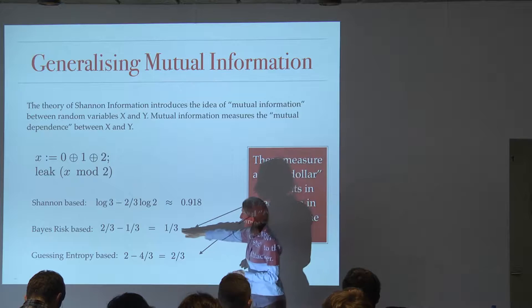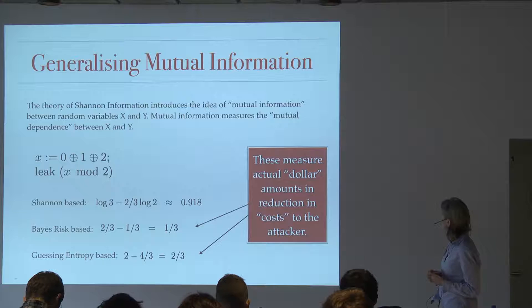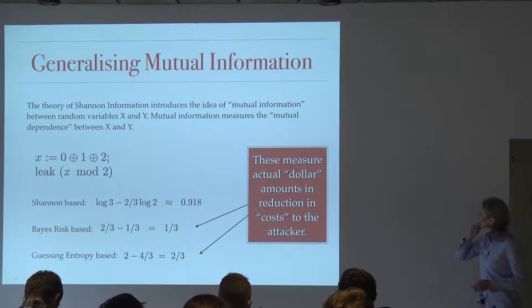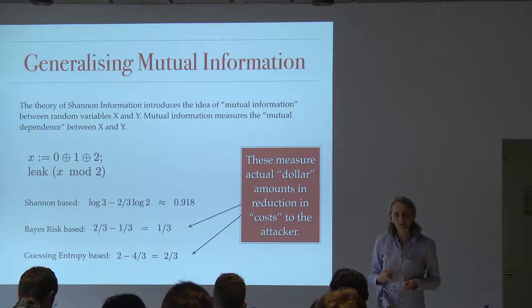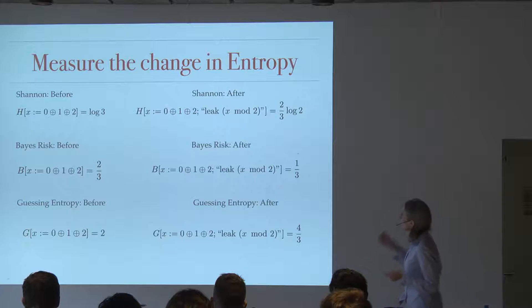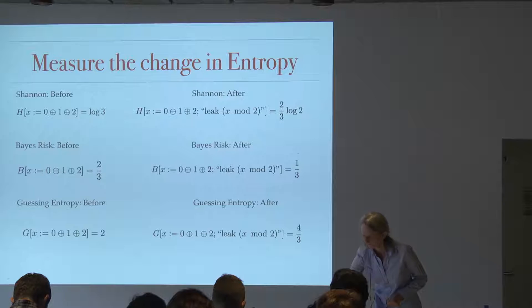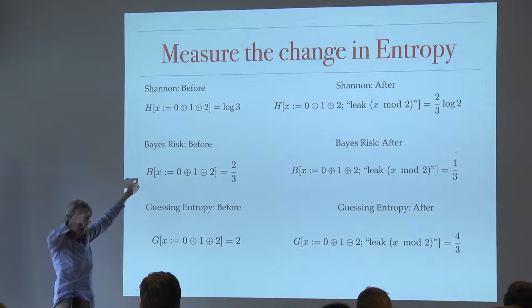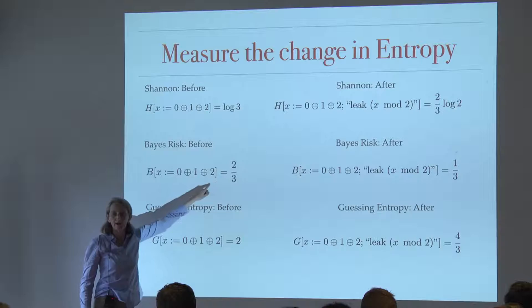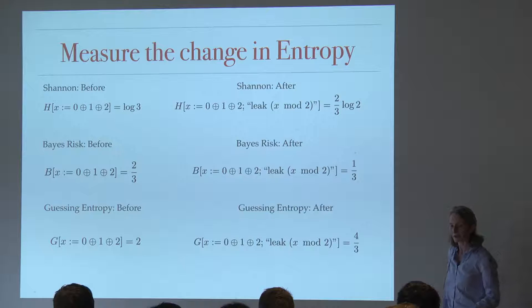We can do this with Bayes risk and guessing entropy as well to get these figures out. The interesting thing is these measure the actual dollar-amount benefit to the attacker in following those two guessing-cost analysis scenarios. What we do is look at the Shannon entropy H, the Bayes risk, and the guessing entropy — we measure that on the prior before, and measure the conditional entropy afterwards taking the observations into account. Then we take the difference between those two numbers.